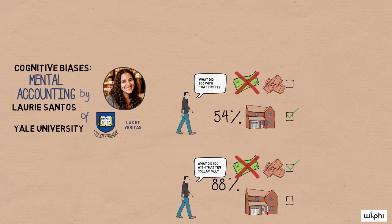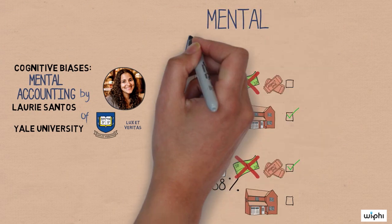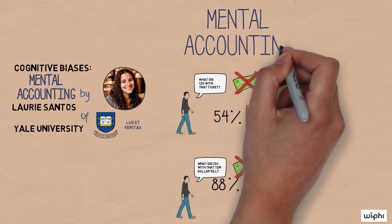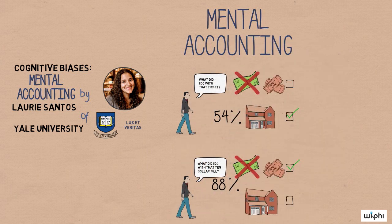The different responses to these cases illustrate a bias known as mental accounting. We use different accounts in our heads for different activities, and the resources from one account aren't automatically transferred for use in another.